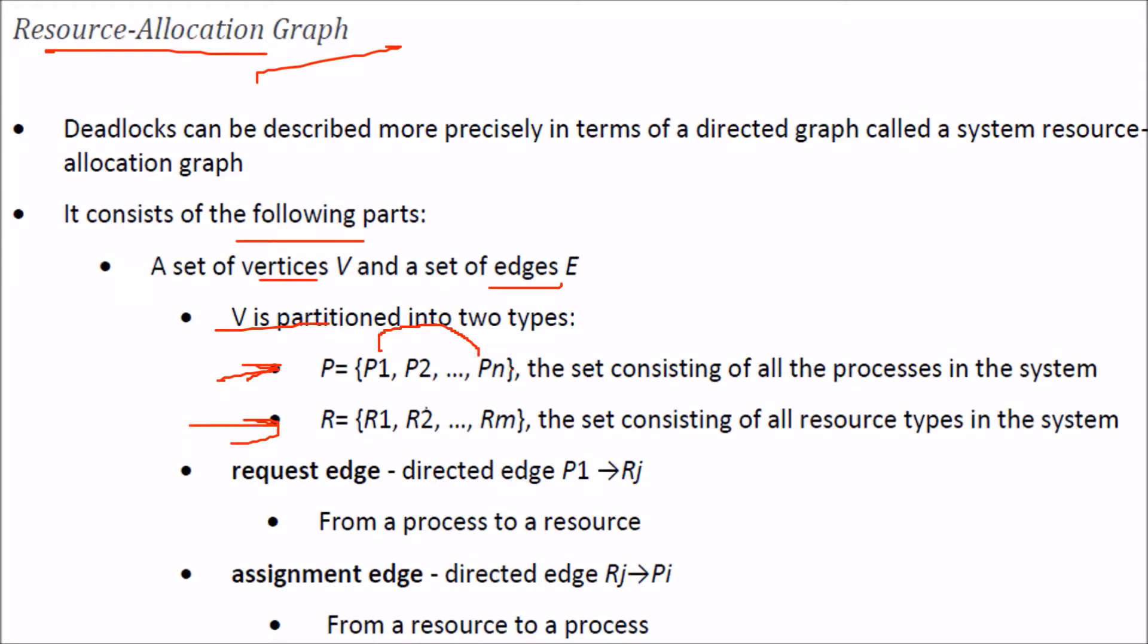Process can be number of processes, p1 to pn. These are the set consisting of all the processes in the system. We have R, which is the set consisting of all the resource types in the system.